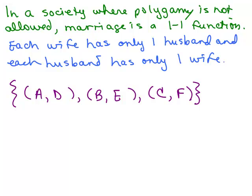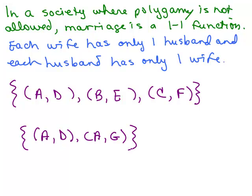Now if Amy were married to two people — say both Don and Gary — that would not be one-to-one. In fact, this would not even be a function, because in a function the x coordinates can't be listed more than once. For each x, there's only one y, but it doesn't have to go the other way.